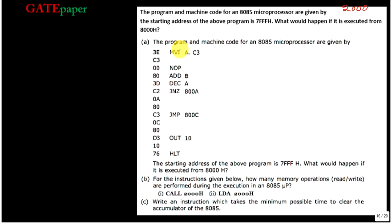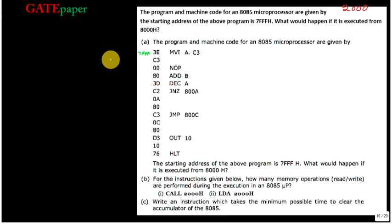We are going to discuss the GATE 2000 ECE paper. Look at the program and the relation code given for the 8085 microprocessor. If the program starting address is 7FFFH but unfortunately it is executing from 8000H, what happens? What will be the output of this program? That is what we are going to find.